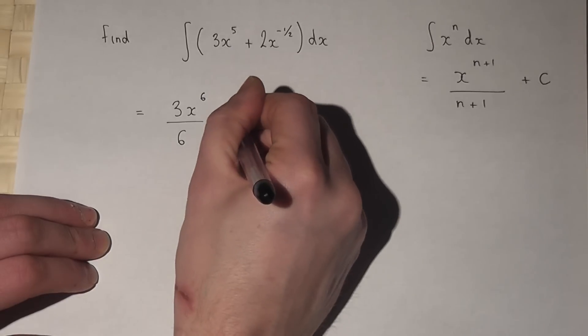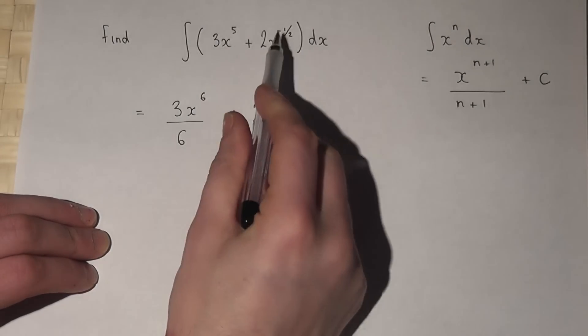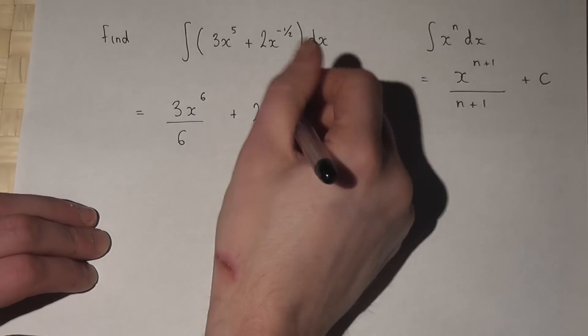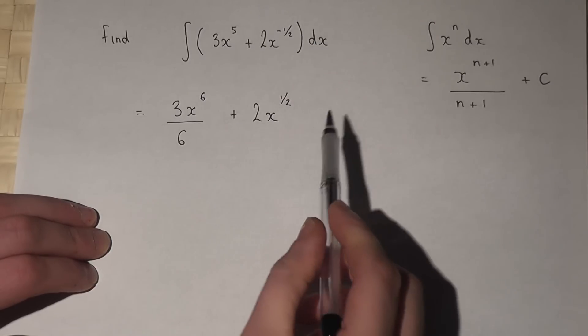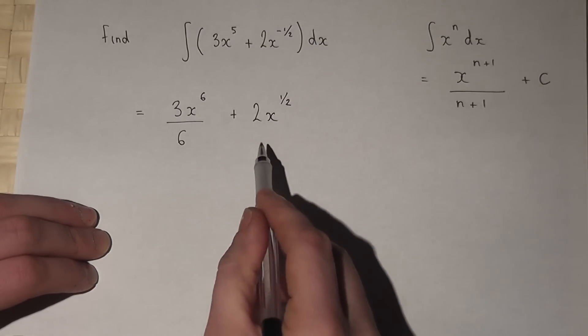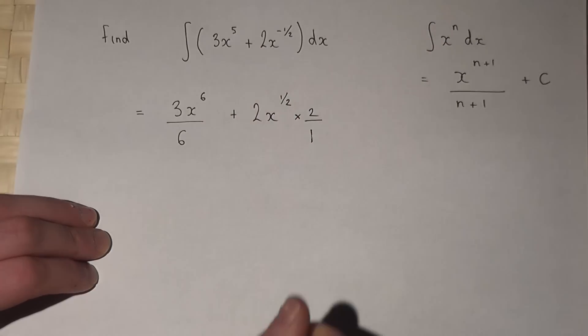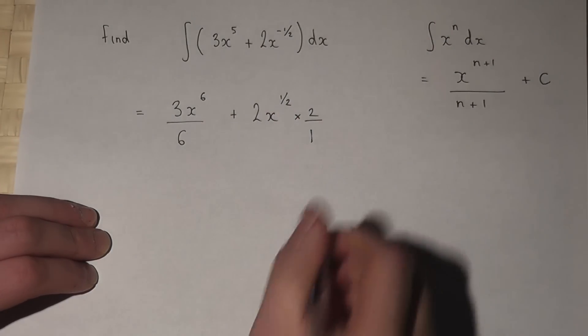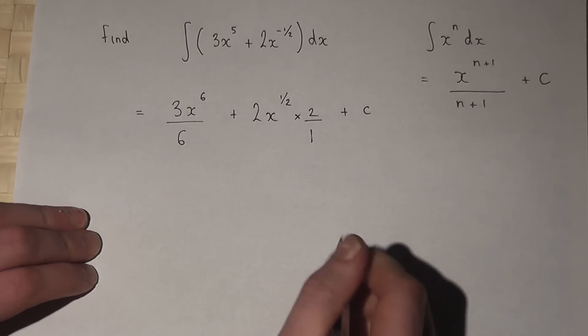The second term we have 2x. Now minus a half plus 1 is plus a half. We then divide by a half, but if we divide by a half that's the same as times by 2 over 1. And of course plus c for the constant of integration.